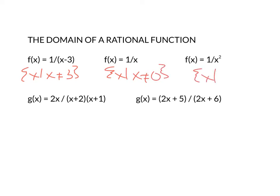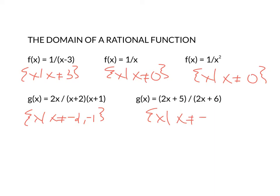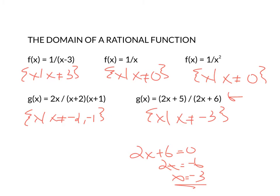The third one, all x such that x does not equal zero, because zero would make the bottom zero. A little bit different on this one — all x such that x cannot equal negative two or negative one, because both would make my denominator zero. And the last one here, all x such that x cannot equal negative three, because negative three would make the denominator zero. Think about it: if I had two x plus six not equal zero, you move the six over, x would equal negative three. So that's why it cannot equal negative three.